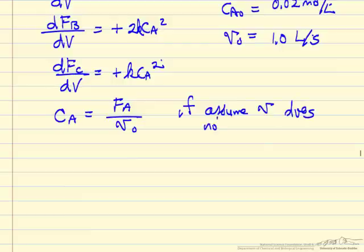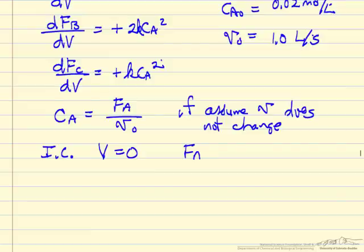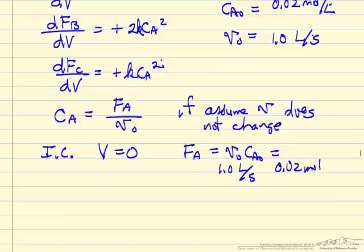We know this assumption is not correct; the question is how bad an assumption it is. To solve these differential equations we need initial conditions — at the inlet, the molar flow rate of A equals the volumetric flow rate times the concentration: 1 liter per second times 0.02 moles per liter. So the inlet molar flow rate, FA0, equals 0.02 moles per second.